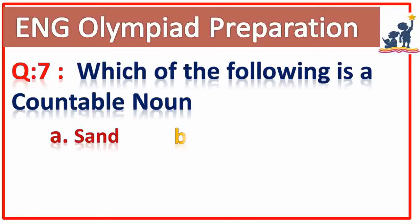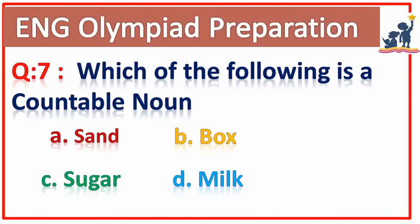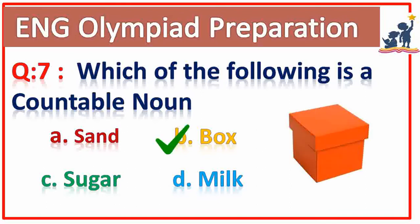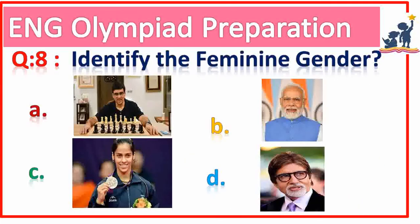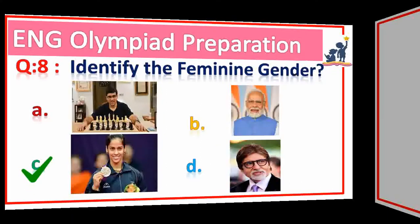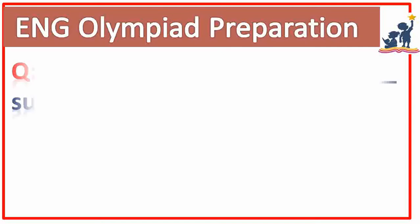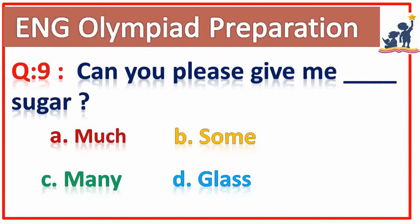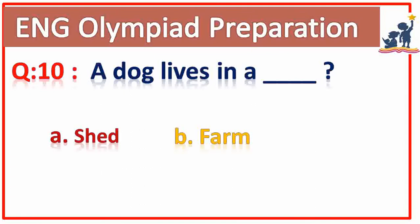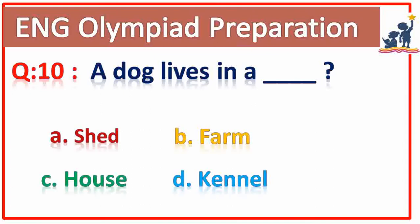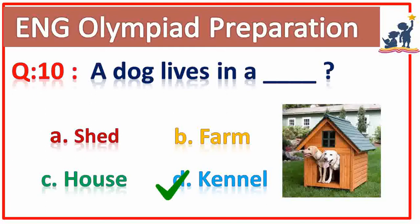Question number seven: which of the following is a countable noun? Box. Yes, right. Question number eight: identify the feminine gender. Answer C. Very good. Question number nine: can you please give me some sugar? Some. Yes, very good. Question number ten: a dog lives in a dash. Kennel. Yes, the right answer is kennel.